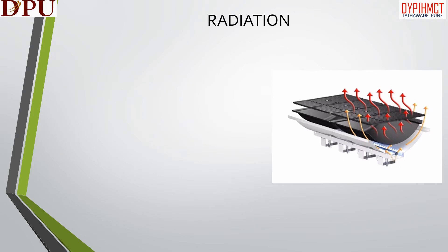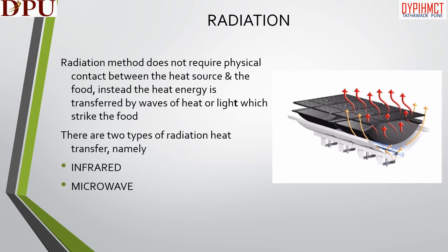In this slide we will discuss about radiation. Radiation method does not require physical contact between the heat source and the food; instead, the heat energy is transferred by waves of heat or light which strike the food. There are two types of radiation heat transfer: infrared and microwave.